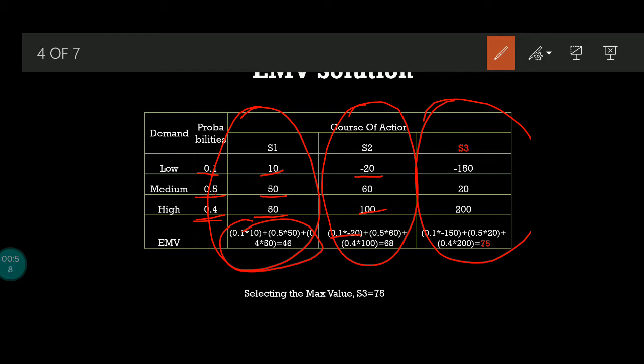Similarly for S3: 0.1 times 150 plus 0.5 times 20 and 0.4 times 200, you get an answer. Now you have three different answers: 46, 68, and 75. Out of this you have to find the maximum value, which is 75.